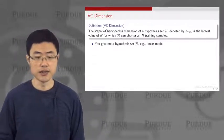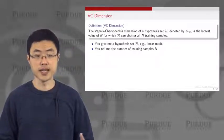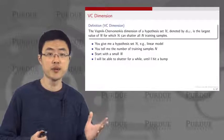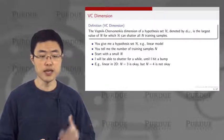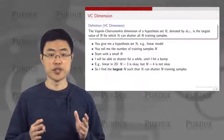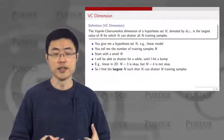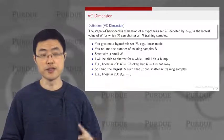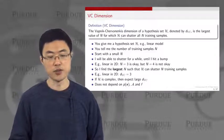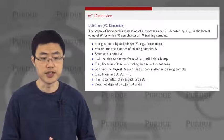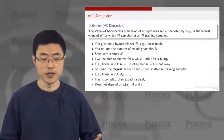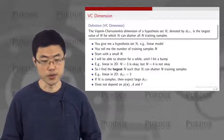Given a hypothesis set h such as a linear model, you start with a small n and grow it — as n becomes bigger, eventually you hit a point where you cannot shatter. In 2D, n equals 3 works, but when n goes to 4, it does not. So you find the largest n such that your hypothesis set can shatter the training samples. If h is more complex, you need a larger VC dimension, and it does not depend on the distribution, learning algorithm, or target function. That is the power of the VC dimension — it is very universal, applicable to SVMs, neural networks, the perceptron algorithm, logistic regression, and so on.